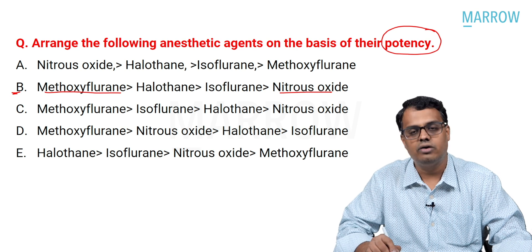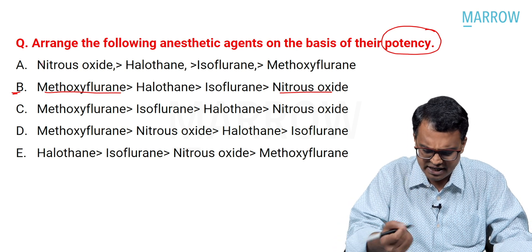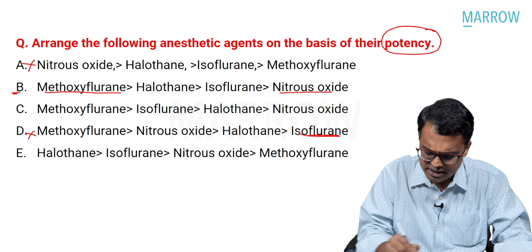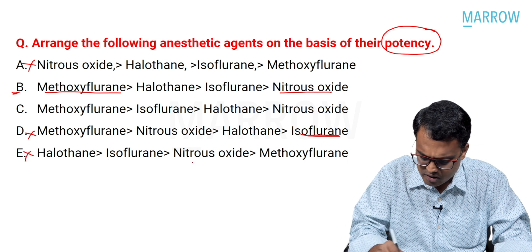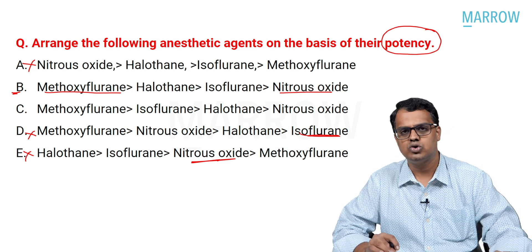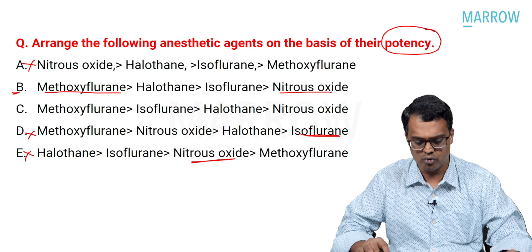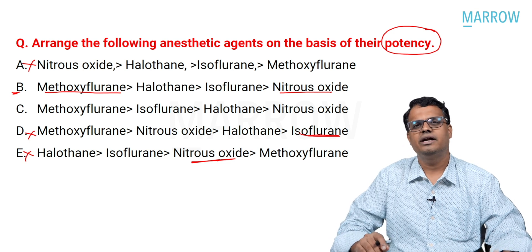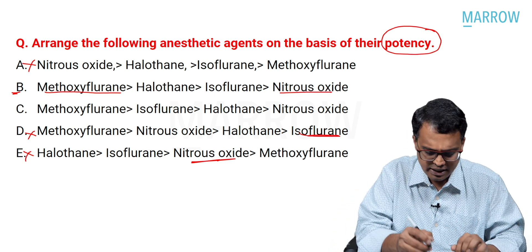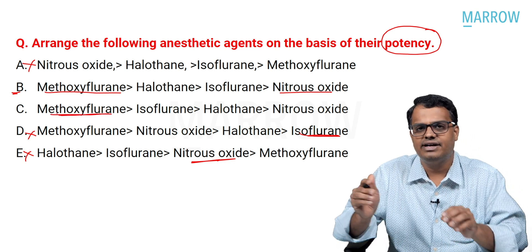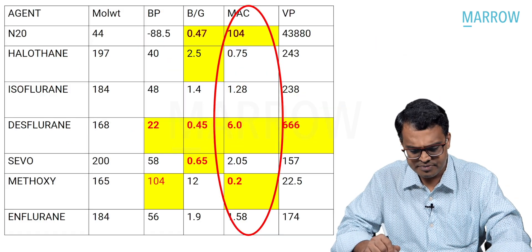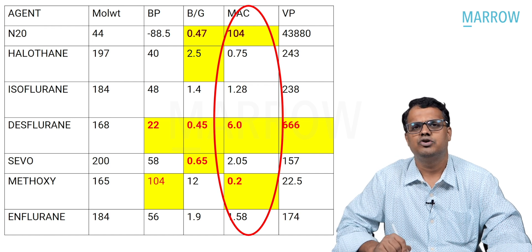If you arrange according to potency, nitrous oxide greater than halothane — the first option is ruled out. The D option is also ruled out because isoflurane is placed incorrectly there. The E option is also ruled out because nitrous oxide is placed in between. We are left with only two options. The point here is not just the question but the concept we need to understand: methoxyflurane has the least MAC and is most potent, nitrous oxide has the highest MAC.